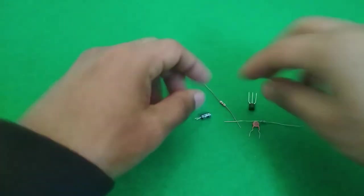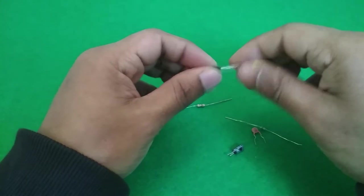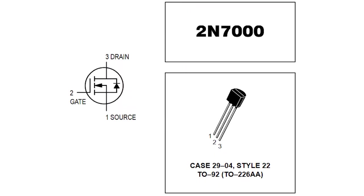The circuit is pretty much as simple as it gets. It uses two resistors, two capacitors, and an FET. I'm using the 2N7000 MOSFET.